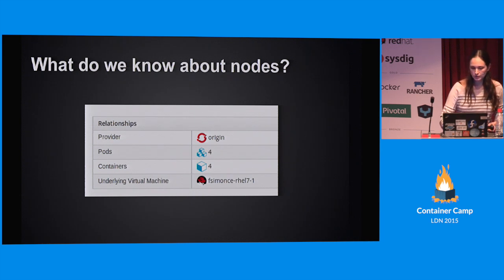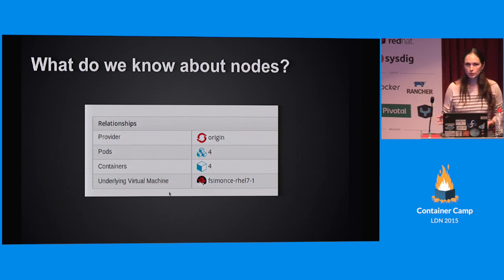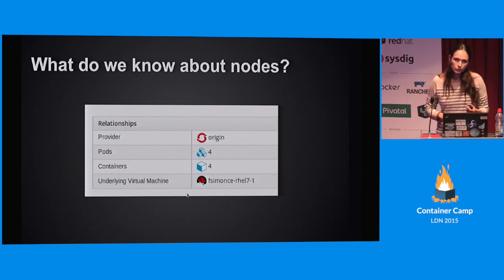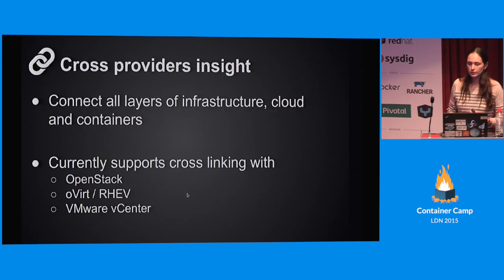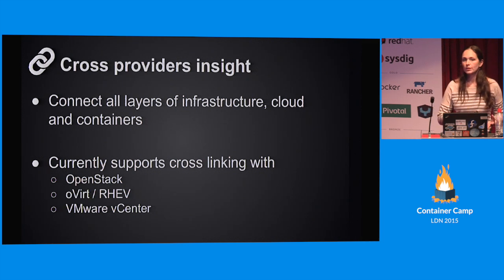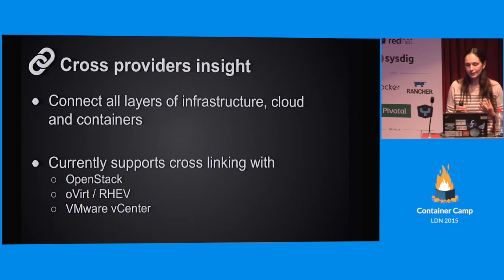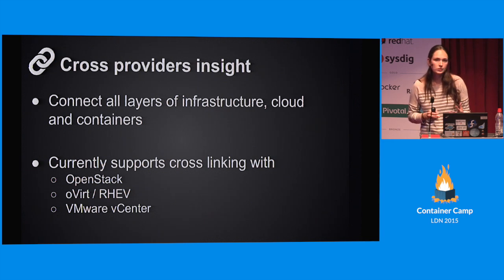Here comes the interesting part - this is the underlying virtual machine. This relationship is not reported by Kubernetes or OpenShift. What we're doing here is something called a cross-provider insight. Given that, let's say, my Kubernetes is running on an OpenStack environment, and both of them are defined and configured in ManageIQ, we are able to correlate them and provide a layer connection between the infrastructure and the container. In the end of the day, we can say that this container is running on this bare metal.